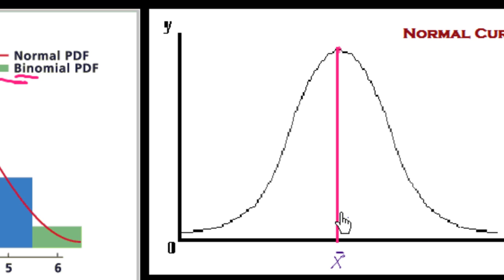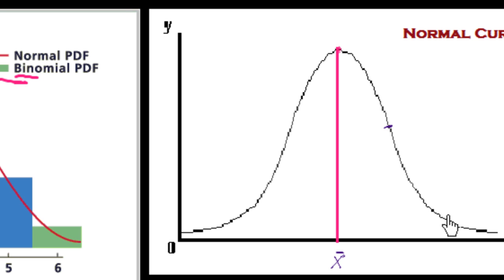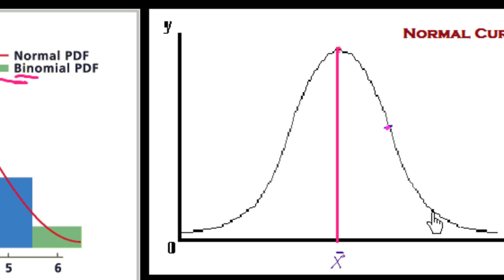On the right side of x-bar are values greater than the mean, and on the left side are values smaller than the mean. Now, on both sides there are points of inflection. A point of inflection is where the curve changes direction from one direction to another. The first point of inflection is where the curve changes direction here; the second point of inflection is where the curve changes direction again; and the third point of inflection is here on the right side.